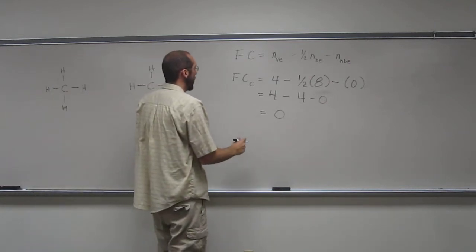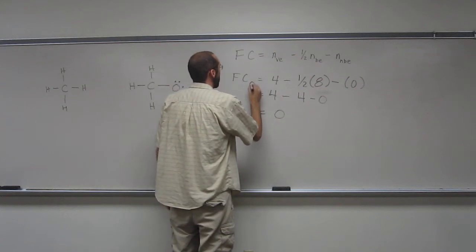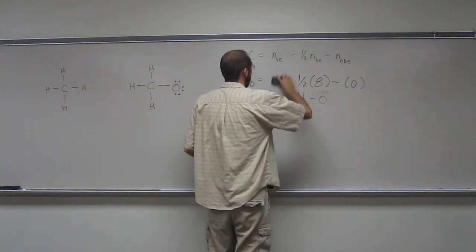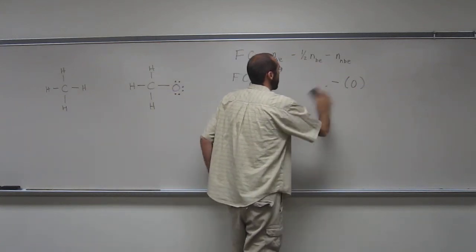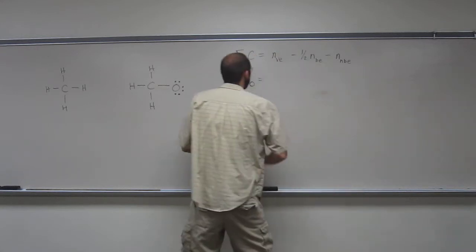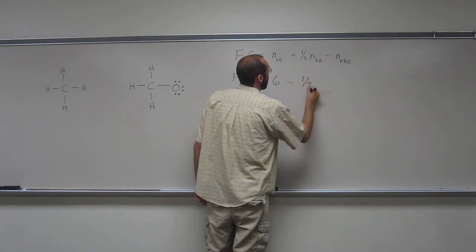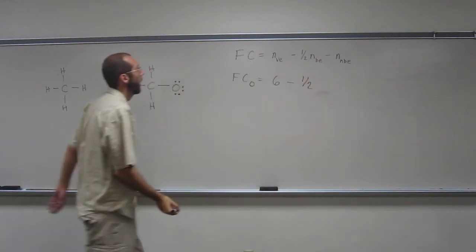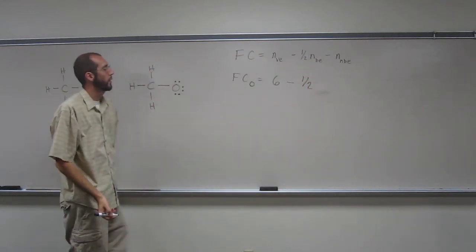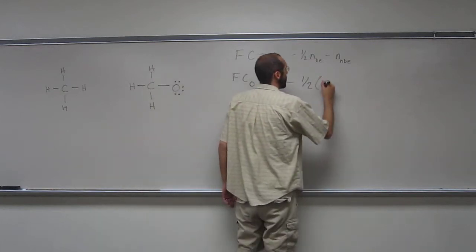So we can do the one for oxygen now. So how many valence electrons does oxygen have? So 6, very good. One-half, so the number of bonding electrons in this one is 2. We only have the one bond.